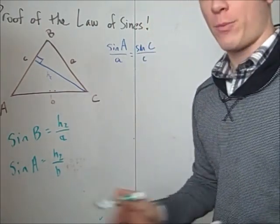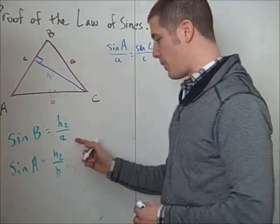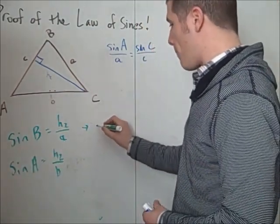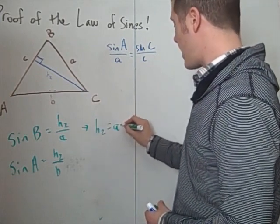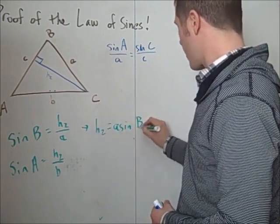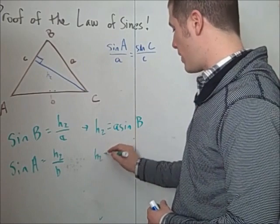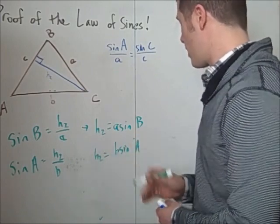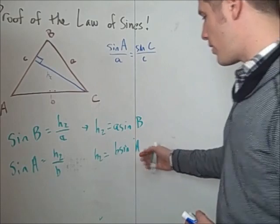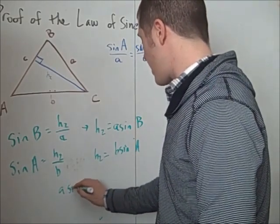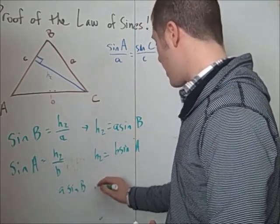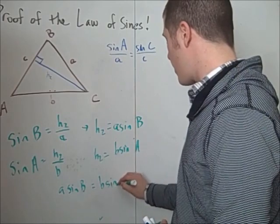And we go through the same process here. Multiply both sides by little a, and I get H2 is a times the sine of B. And here I get H2 is b times the sine of A. I set these two things equal to each other. A times the sine of B is equal to b times the sine of A.